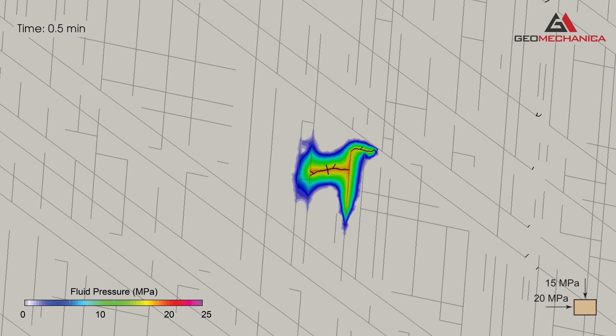When the injection pressure exceeds the rock strength, we also see new fractures begin to propagate away from the injection point, parallel to the maximum principal stress.